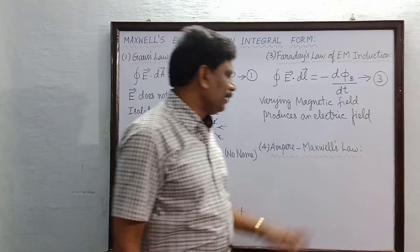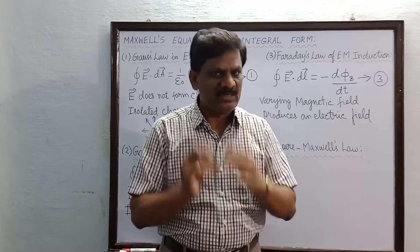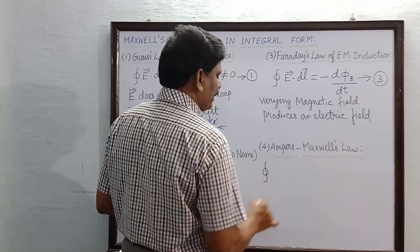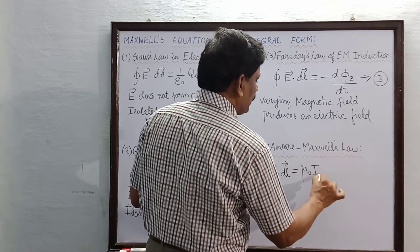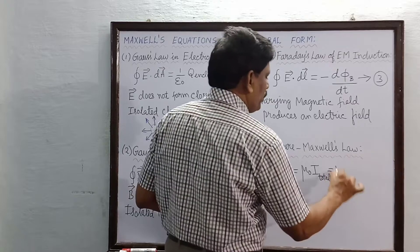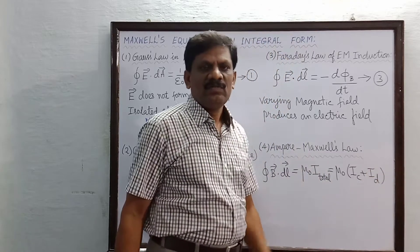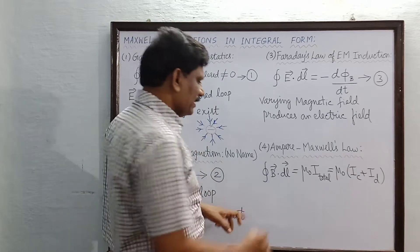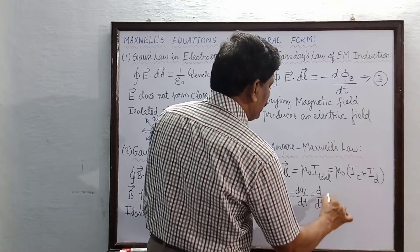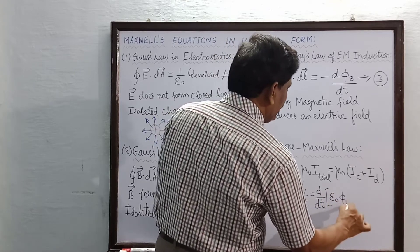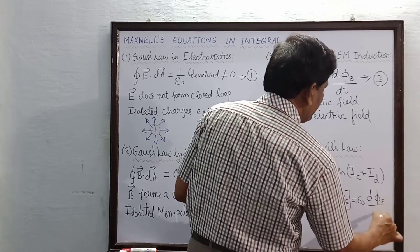Finally, we come to Ampere-Maxwell's combined law. Ampere's circuit law was modified by Maxwell. The closed integral B dot DL is now equal to mu naught times the total current I total, which equals mu naught times the sum of the conduction current and the displacement current. The displacement current I_D equals DQ by DT, which equals D by DT of epsilon naught times phi E, and this equals epsilon naught times D phi E by DT.